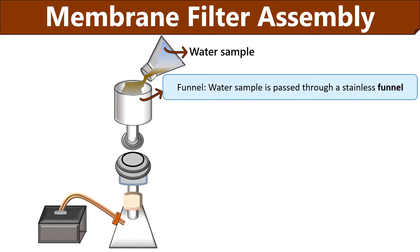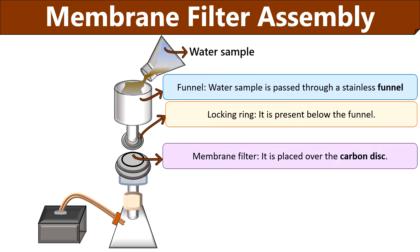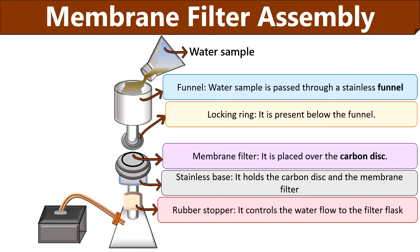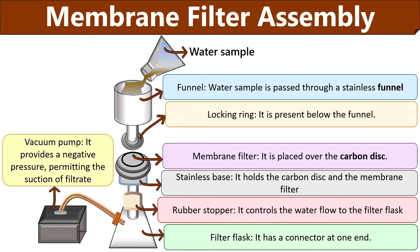The filter funnel is fixed at the top, from where the water sample is passed. The locking ring, also called the clamp, is present below the filter funnel and controls the flow of the water sample. The membrane filter is placed over the carbon disc using sterile forceps. The stainless base holds both the carbon disc and the membrane filter. At the base, a rubber stopper controls the water flow into the filter flask. The filter flask collects the filtrate and has a connector at one end. The vacuum pump is connected to the filter assembly through the connector and provides negative pressure, permitting the suction of filtrate.